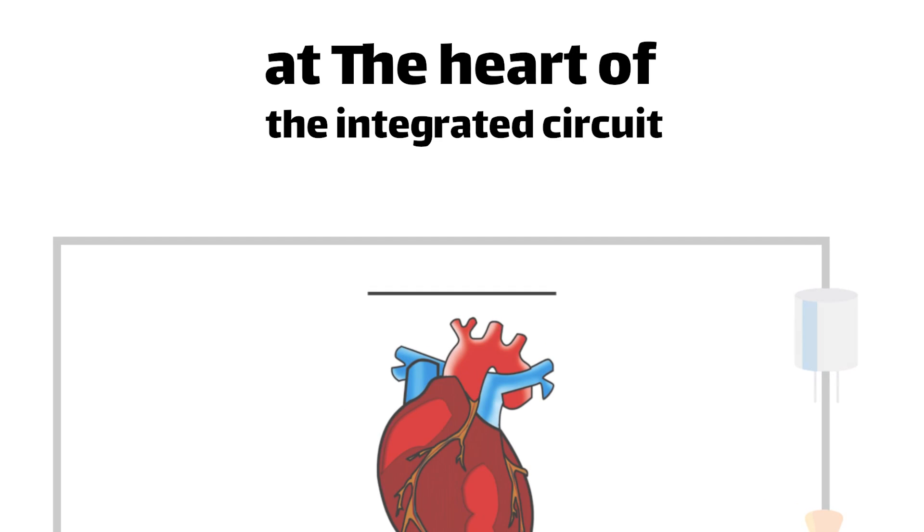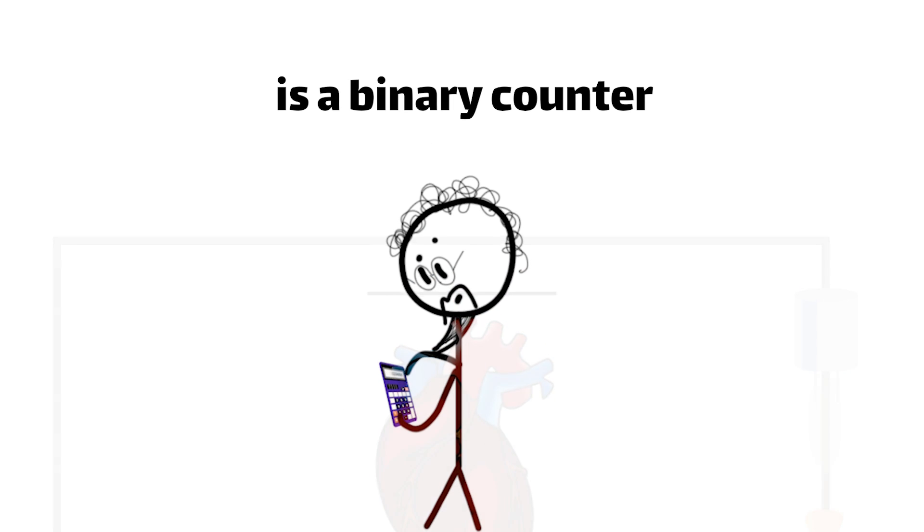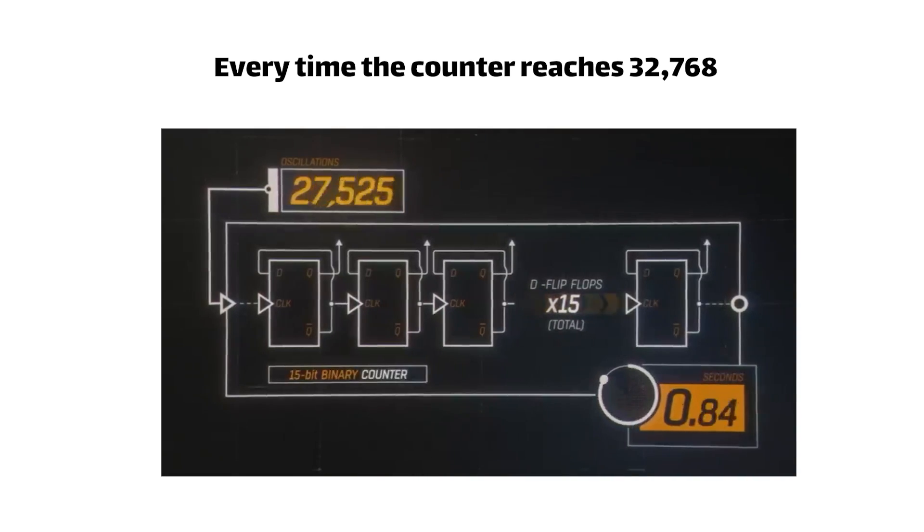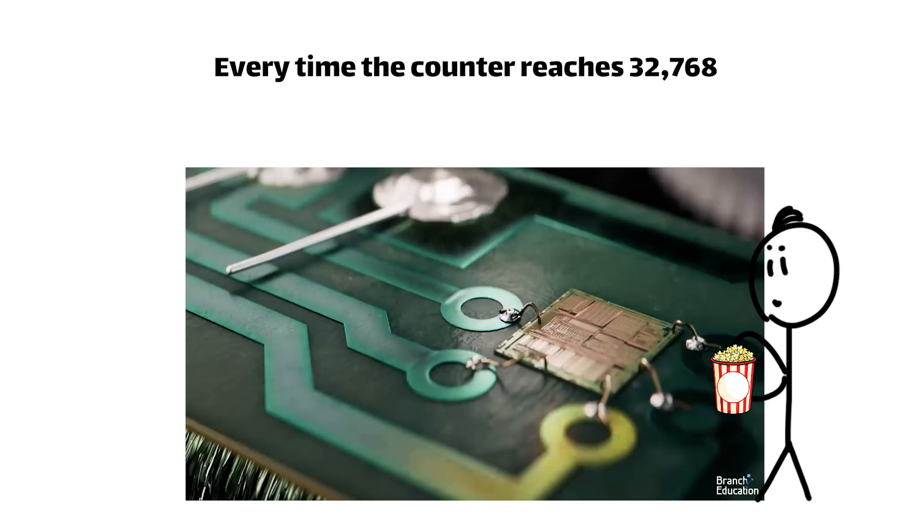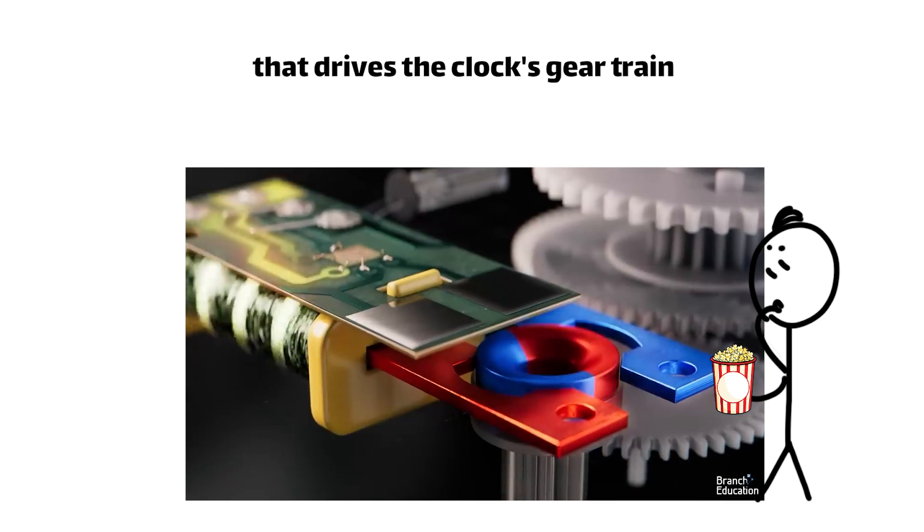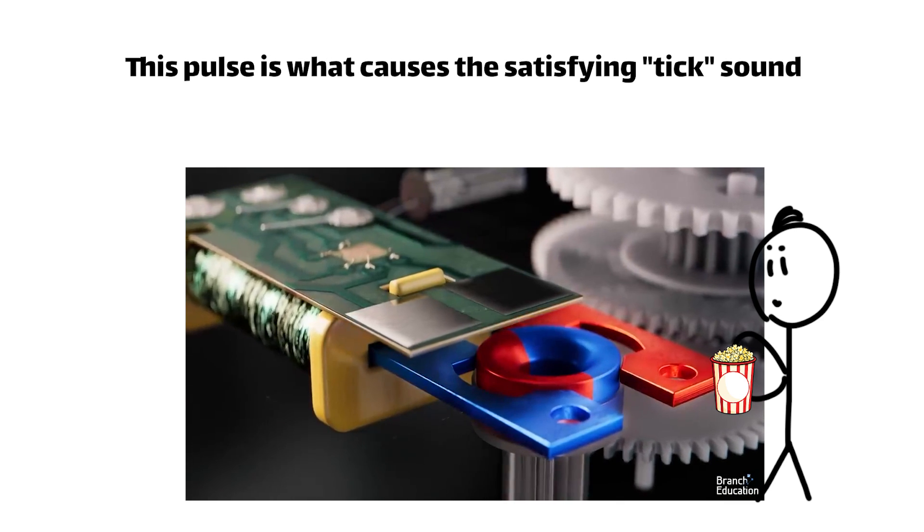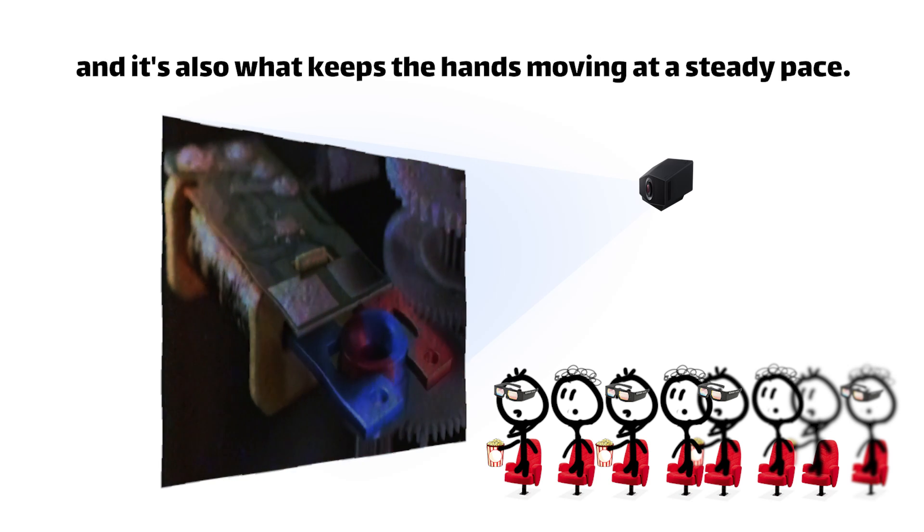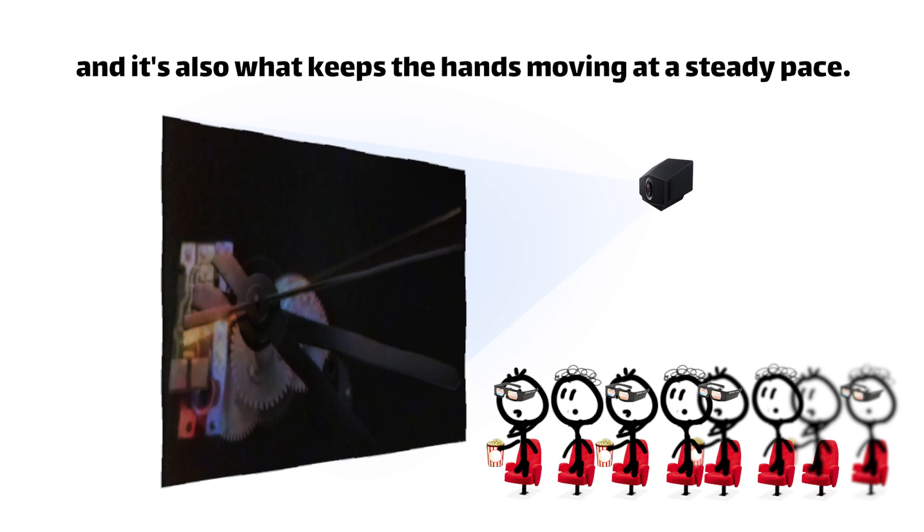At the heart of the integrated circuit is a binary counter, which keeps track of the number of oscillations. Every time the counter reaches 32,768, it sends a pulse to the electromagnet that drives the clock's gear train. This pulse is what causes the satisfying tick sound we associate with analog clocks, and is also what keeps the hands moving at a steady pace.